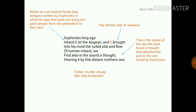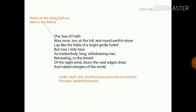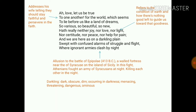In the sound of the sea, the poet hears a thought that disturbs him, just as the one heard by Sophocles. 'Turbid' means muddy and cloudy, and 'ebb' means the tidal movement. 'The Sea of Faith was once at the full' refers again to the dying of faith as seen in the theme. 'Girdle' means a sash or belt — anything that surrounds or encircles. 'Shingles' means pebbled beaches. When Arnold says 'Ah, love, let us be true,' he is addressing his wife, telling her they should stay faithful.